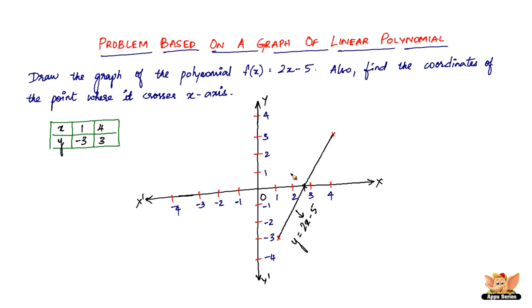So the coordinates is somewhere like, let's keep it 2.5 comma 0. So those are the coordinates. If you do it accurately, you're going to get 2.5 comma 0. So that is the coordinates of the point where the line crosses the x-axis.